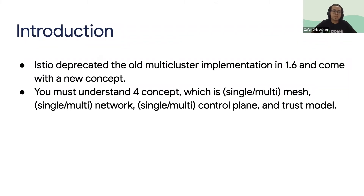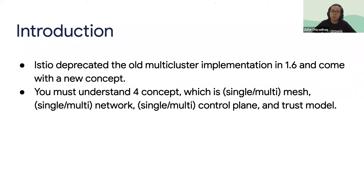I believe some people here already know the concept of Istio multi-cluster, but I'll explain some of it. We have already implemented the old multi-cluster setup in 1.6, but no one — neither the dev team nor the systems team — used this concept. Istio has introduced a new concept for multi-cluster. In this concept we need to understand at least four objects: single or multi-mesh, single or multi-network, single or multi-control plane, and the trust model.